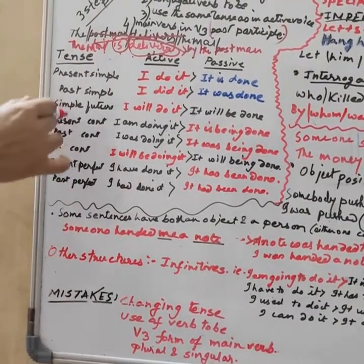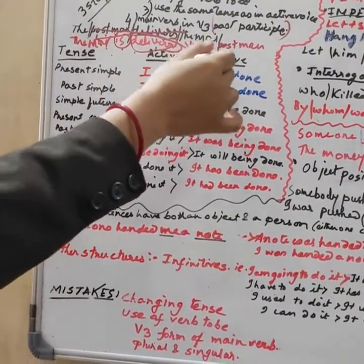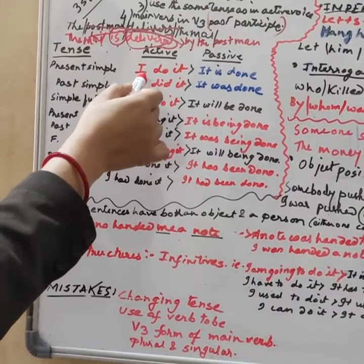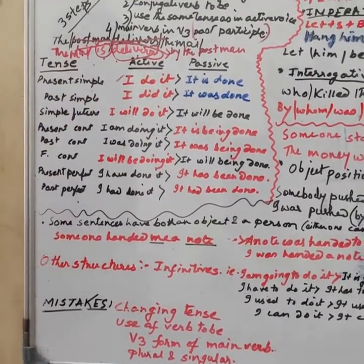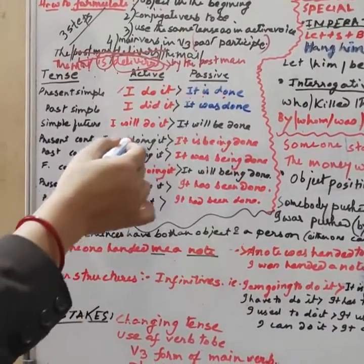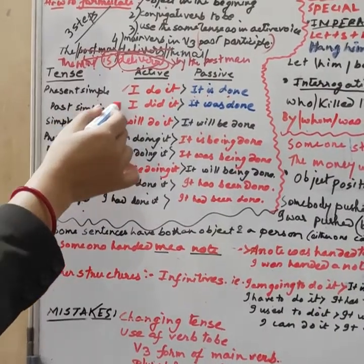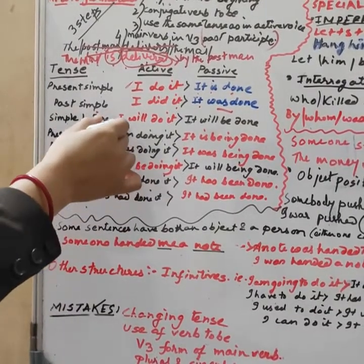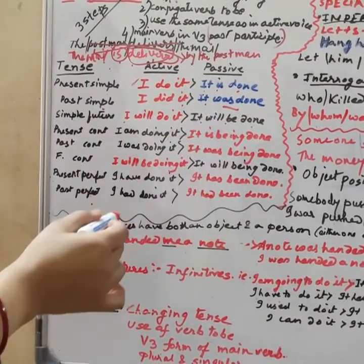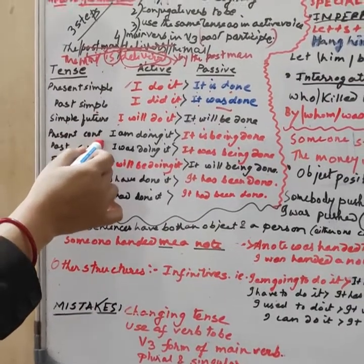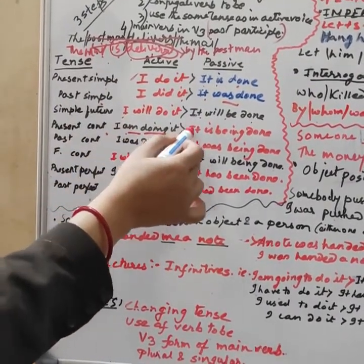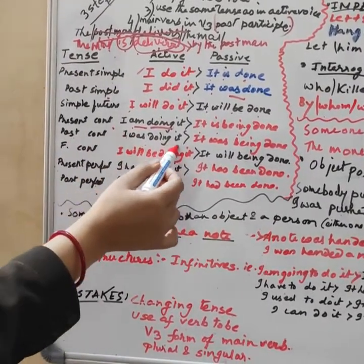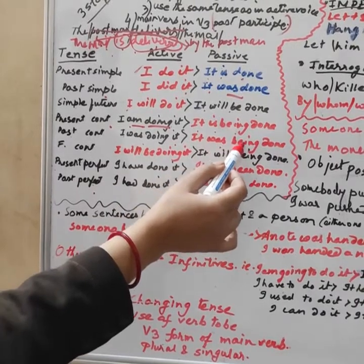Now a quick look at how active voice changes to passive voice across tenses. Present simple: 'I do it' → 'It is done.' Past simple: 'I did it' → 'It was done.' Simple future: 'I will do it' → 'It will be done.' Present continuous: 'I am doing it' → 'It is being done.' Past continuous: 'I was doing it' → 'It was being done.'